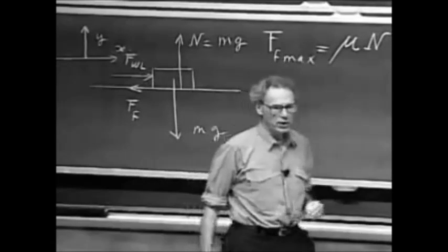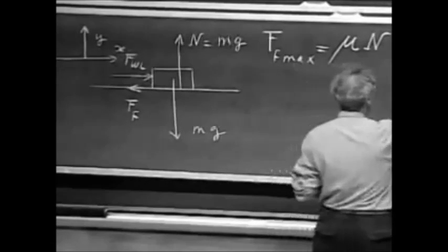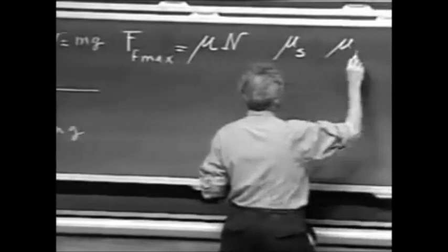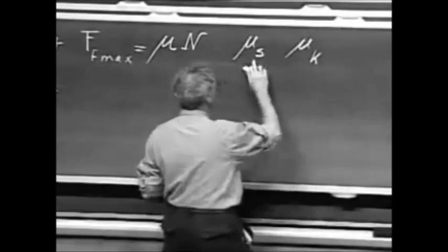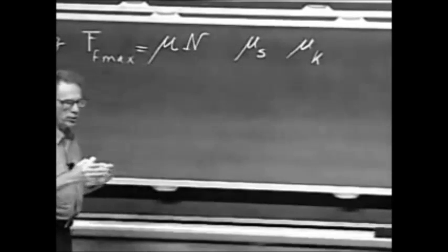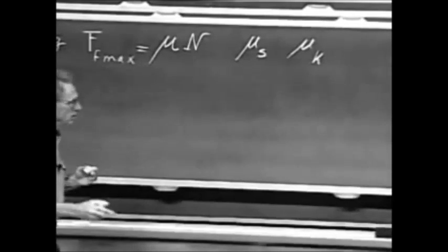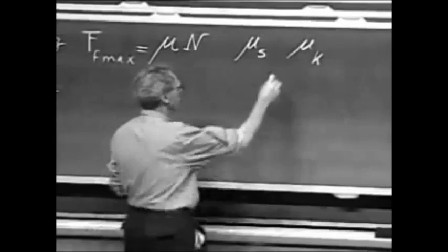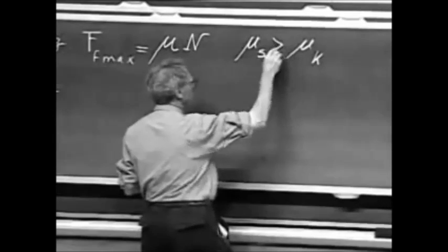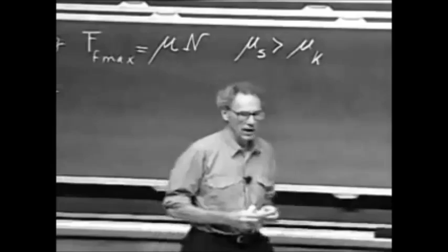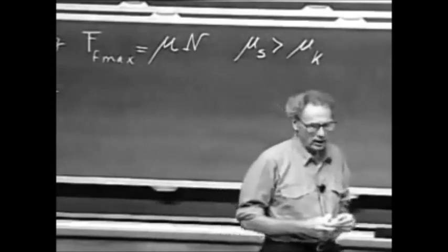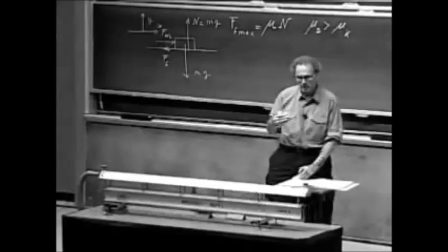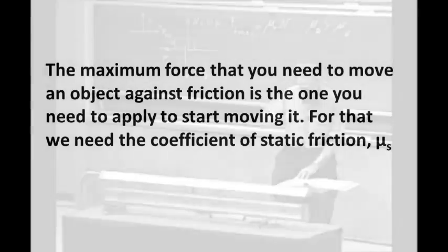We make a distinction between static friction coefficient and kinetic. The static is to break it loose and get it going. The kinetic is to keep it going when it already has a certain velocity. The static is always larger than the kinetic. It's a little harder to break it loose than to keep it moving.